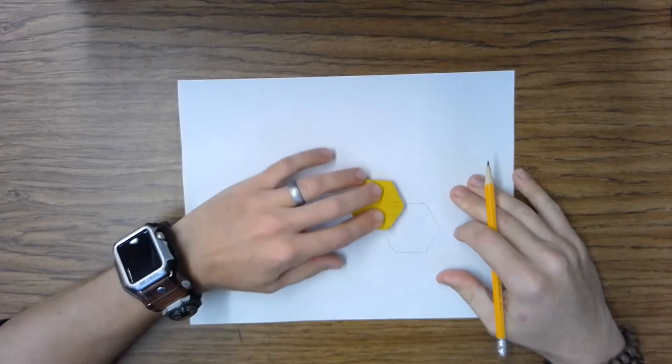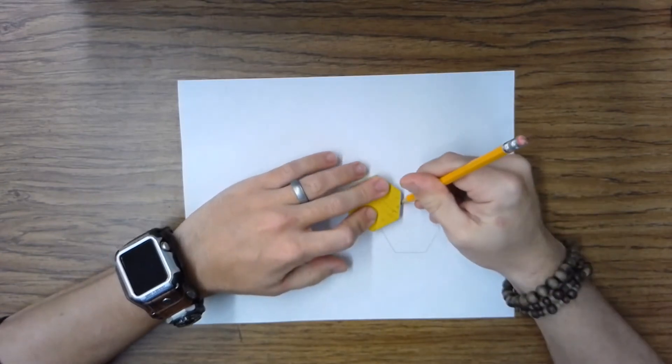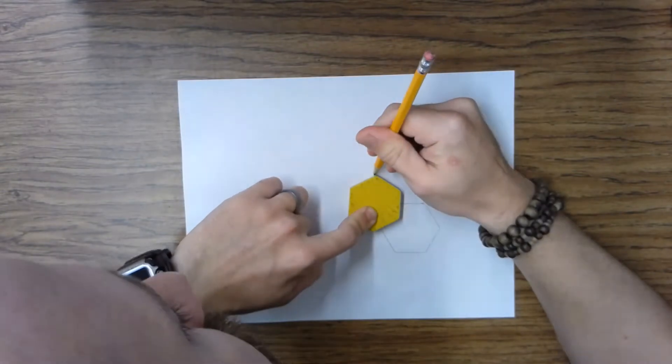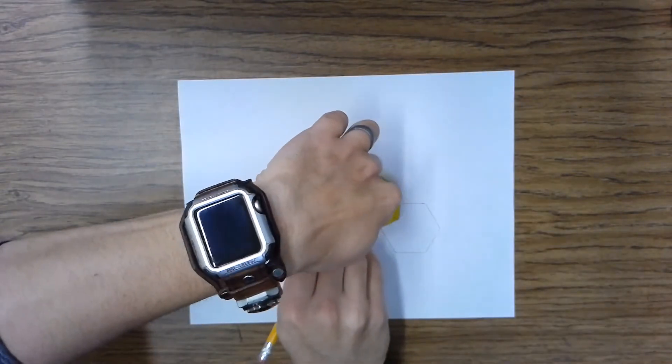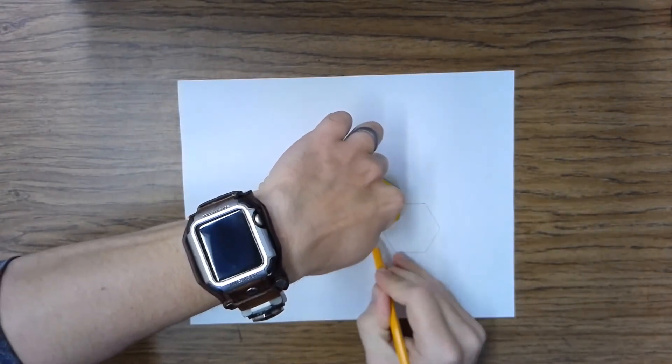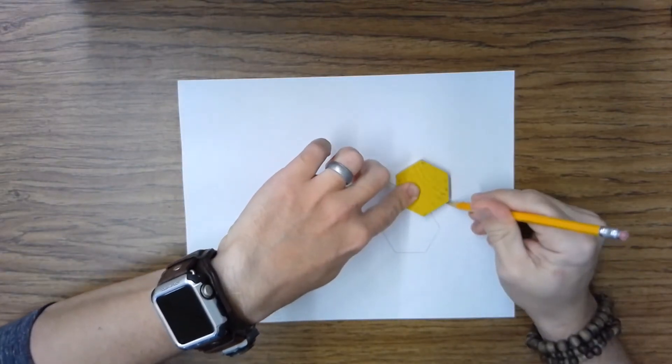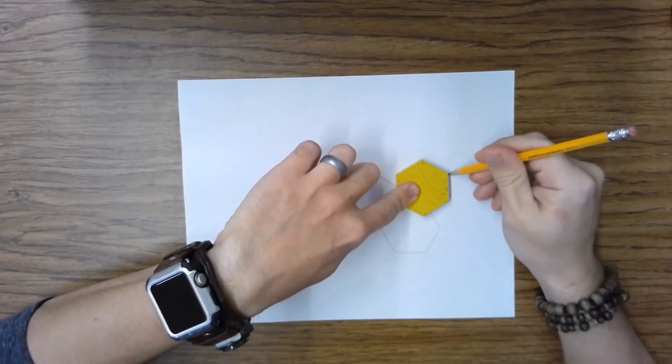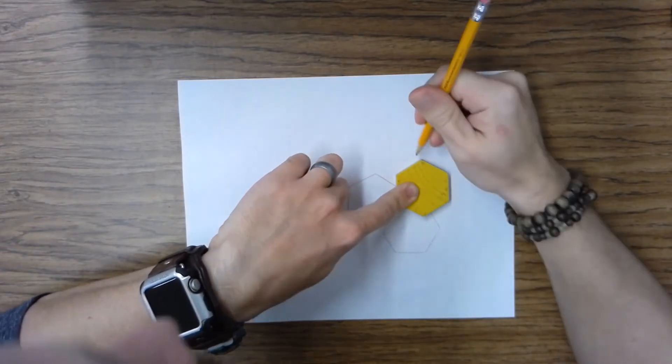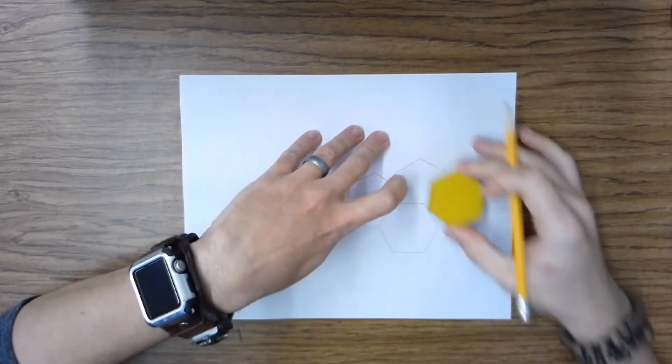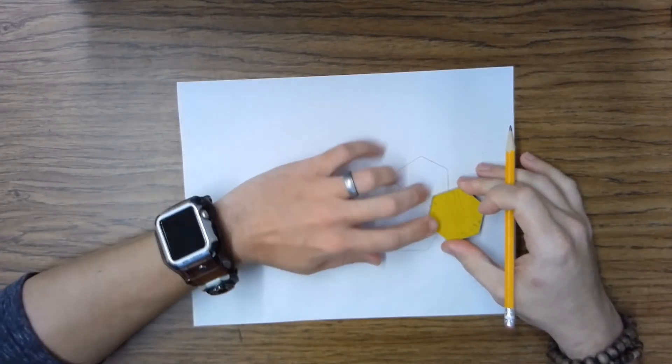And then we're going to trace it a whole bunch more all over the paper. We just keep going until we cover the whole paper.